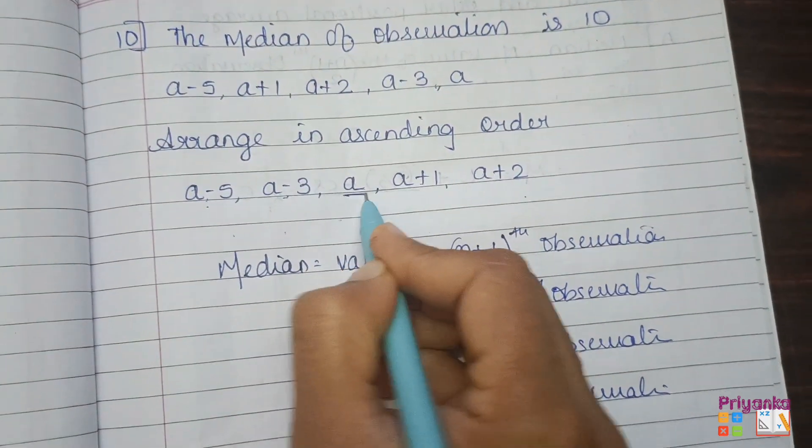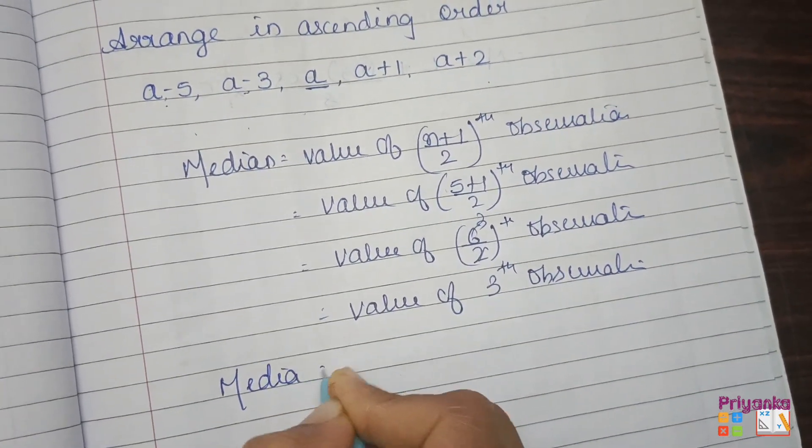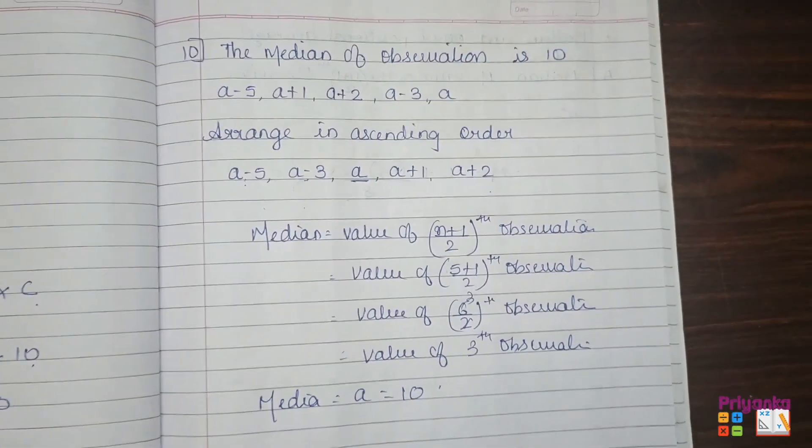The value is 3. Third observation is median: 1, 2, 3. That is, median is a. And median given in the question is 10. So this is how you solve question number 10.